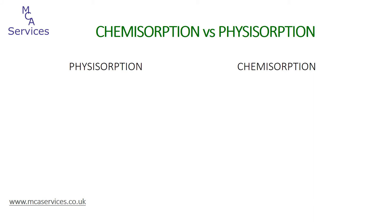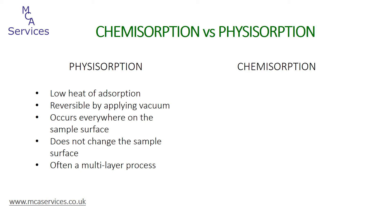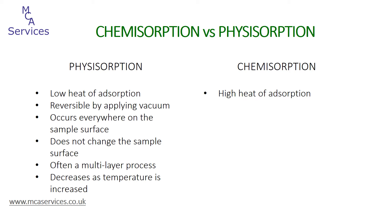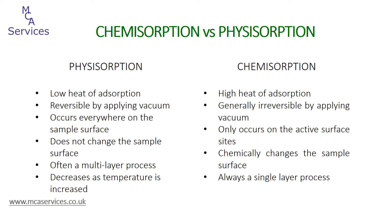We can summarise the typical differences between physisorption and chemisorption. With physisorption, the heat of adsorption is low; through application of a vacuum, the process is reversible. It occurs everywhere on the sample surface, does not change the sample surface physically or chemically, is often a multi-layer process under the correct conditions, and physisorption decreases as temperature is increased. With chemisorption, the heat of adsorption is high; it is generally irreversible just by applying a vacuum. It only occurs on the active surface sites, not the support material. It changes the sample surface chemically, is always a single-layer process, and as temperature is increased, so the chemisorption process increases.